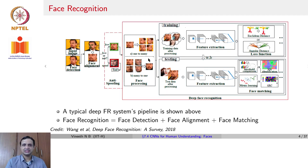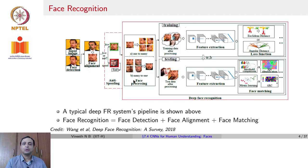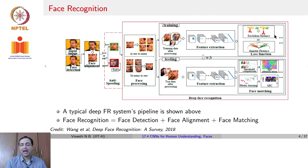The next stage can be looked at as face processing. There are two kinds: one-to-many and many-to-one, depending on what application you want to use. The preprocessing task is optional depending on the application. Once you have your training data after all these processing steps, you provide it to a convolutional neural network for feature extraction. At the end, you use different kinds of loss functions, such as Euclidean distance or angular distance, to train the CNN.